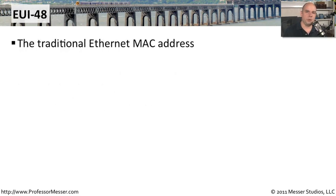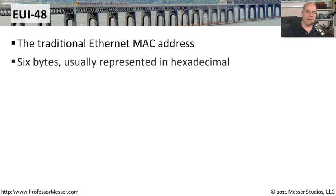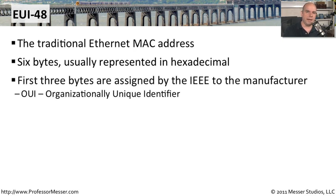The EUI 48 is what we traditionally think of as the MAC address of an Ethernet computer, and it is six bytes long, displayed on screen in hexadecimal format. The first three bytes of the MAC address are assigned by the IEEE — some applications will even replace those three bytes with the name of the manufacturer they were assigned to. We call those first three bytes the organizationally unique identifier, or OUI. You can search for OUIs on the internet to find out how they've been assigned to particular manufacturers.